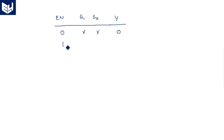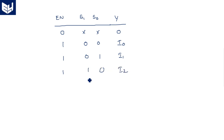When enable pin equals 1, the chip is activated and output Y is chosen from the four input lines based on S1 and S0. S1=0, S0=0 (binary 00) selects I0; S1=0, S0=1 selects I1; S1=1, S0=0 selects I2; and S1=1, S0=1 selects I3. This is the basic truth table of the 4 by 1 multiplexer.